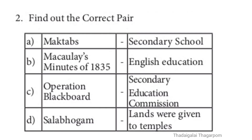Section 5, Question 2 — Find the correct pair. A. Mac tabs — Secondary School. B. Macaulay's Minutes of 1835 — English Education. C. Operation Blackboard — Secondary Education Commission. D. Salebham lands were given to temples. The correct pair is B — Macaulay's Minutes of 1835 and English Education.